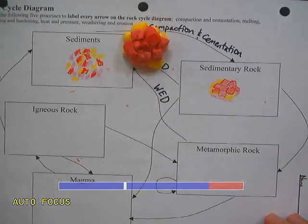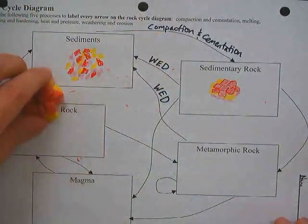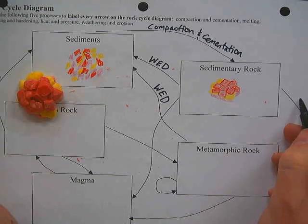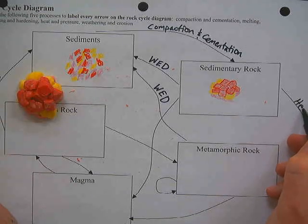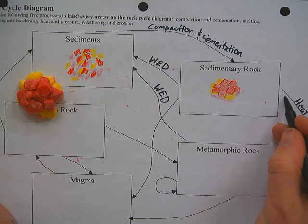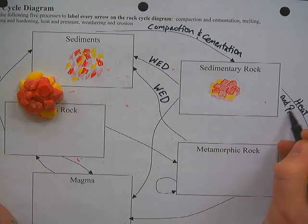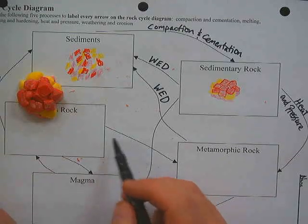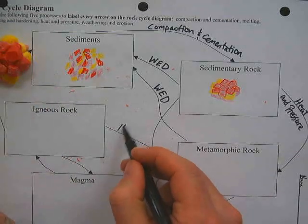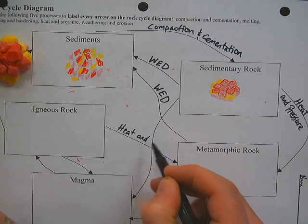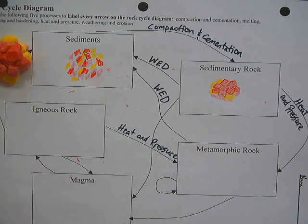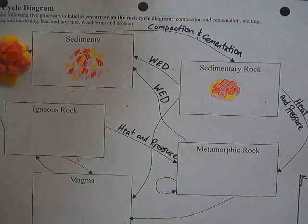Next we're going to make a metamorphic rock. For a metamorphic rock we need heat and pressure, so on the arrows going to metamorphic rock I'm going to write 'heat and pressure,' including the arrow coming from the igneous rock.